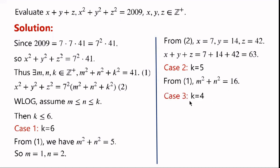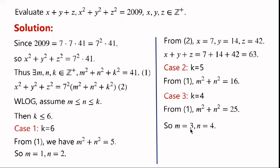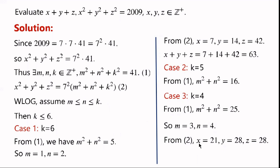Case 3: k equals 4. Then equation 1 becomes m squared plus n squared equals 25. So m equals 3, n equals 4. From equation 2, x equals 7m; m equals 3, so x equals 21.